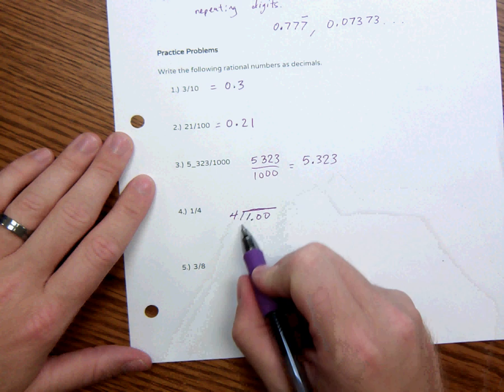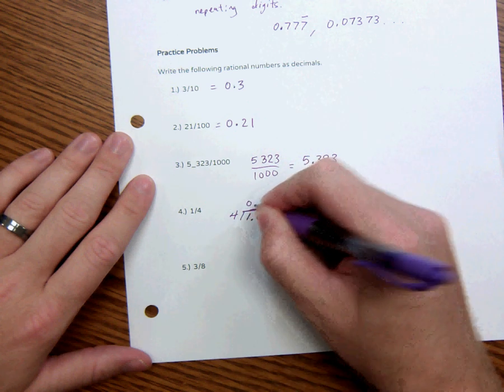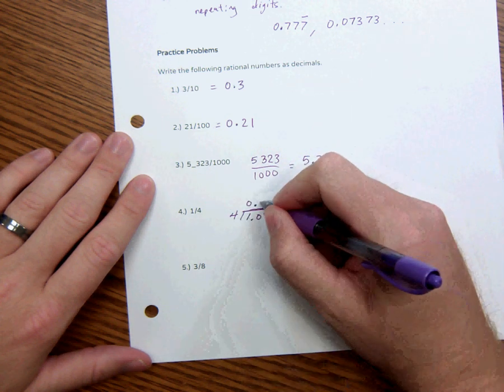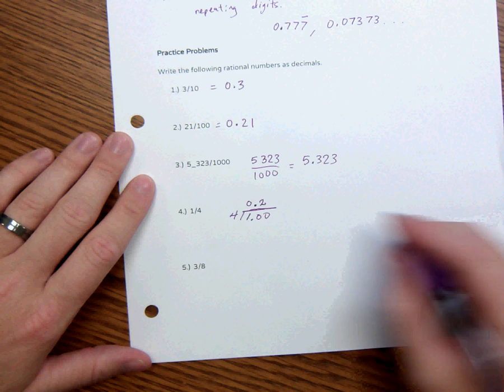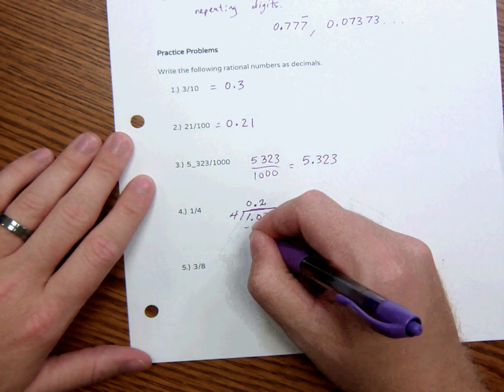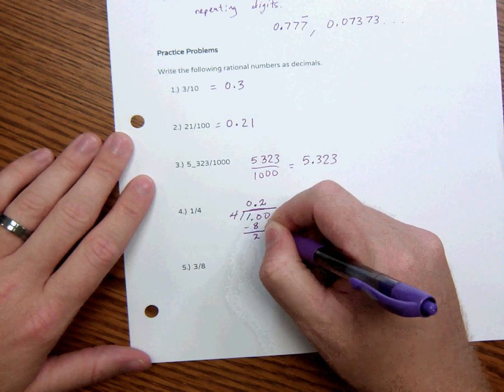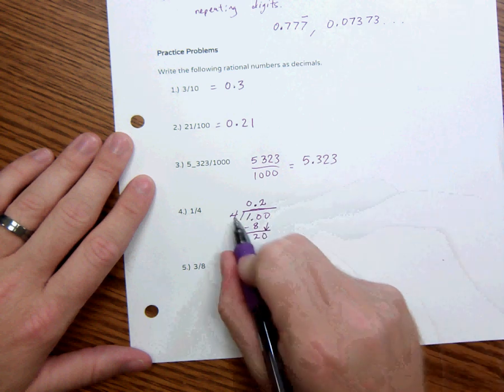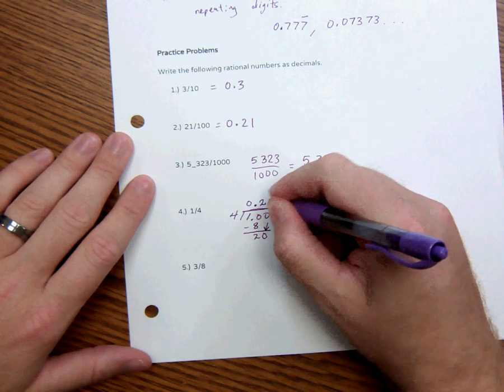4 goes into 1 no times. 4 goes into 10 twice, and that's 8. Subtract, we have a 2, bring down a 0. 4 goes into 20 five times.